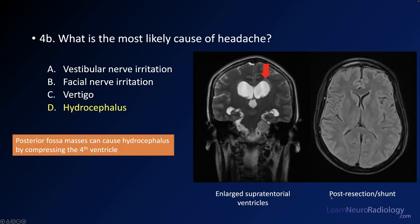We also had the question of the most likely cause of headache. In this case, the patient has hydrocephalus — the mass effect from this schwannoma compressing the brainstem is compressing the fourth ventricular outflow tracts, causing hydrocephalus. Post-shunting images show the ventricles have gotten much smaller, though there is a small dural fluid collection suggesting possible over-shunting. Remember that posterior fossa masses can compress the fourth ventricle and cause hydrocephalus.